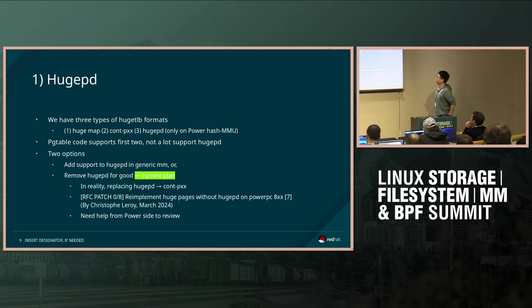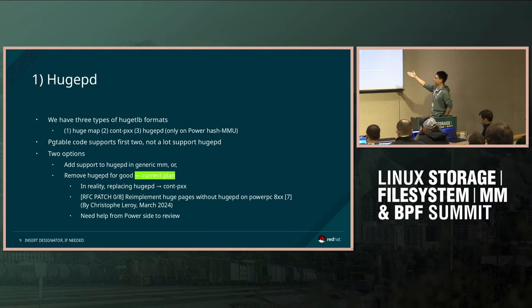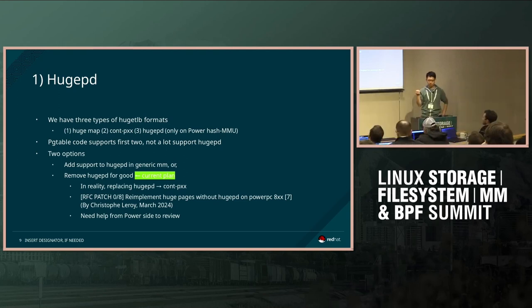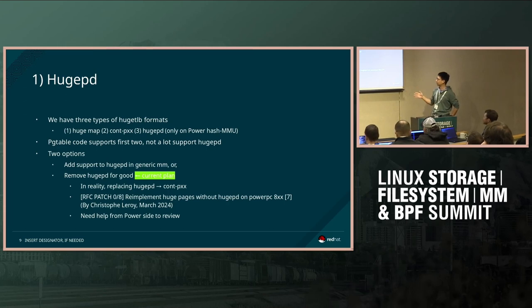Regarding huge PD — we have three types of huge share API formats: huge mapping, continuous PXX, and huge PD which is only used on Power hash MMUs. I noticed this could be removed when I was testing Power code with David Gibson, who worked on PowerPC huge PD and huge TLB support using the huge PD format.